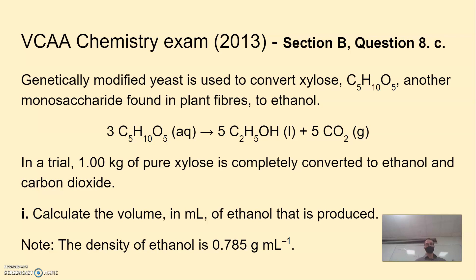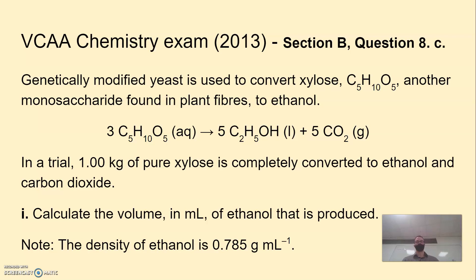Now, using density: volume = mass ÷ density. With mass = 511.1 g and density = 0.785 g/mL, volume = 511.1 ÷ 0.785 = 651 mL. The answer should be given to three significant figures.